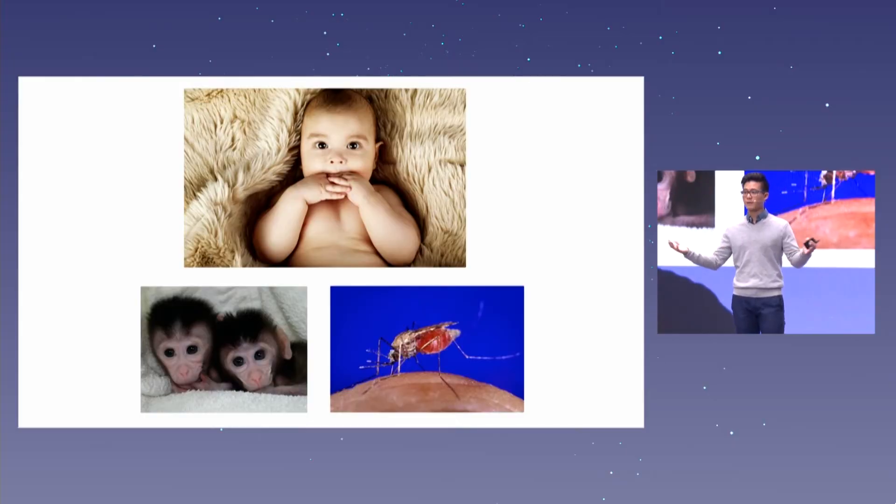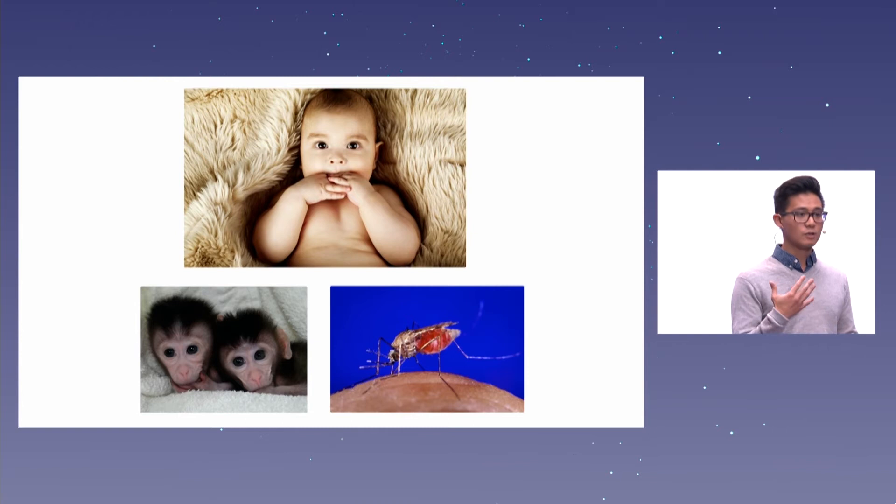So these kinds of ex vivo therapies, or in vivo therapies, are really somatic modifications. They're modifying basically organs or tissues that already exist in an adult. So if they happen at the DNA level, they would be permanent changes, but they wouldn't be heritable.